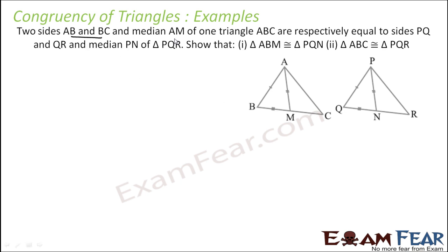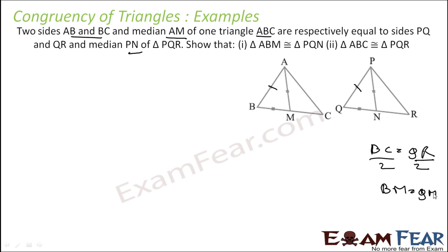Two sides AB and PQ, and a median AM of triangle ABC are respectively equal to the sides PQ, QR, and median PN of triangle PQR. Since medians bisect the side, BC equals QR, and half of BC equals half of QR. AM equals PN. So all three corresponding sides of triangles ABM and PQN are equal. By SSS they are congruent.